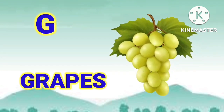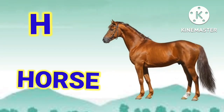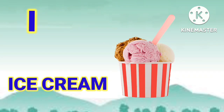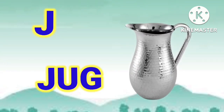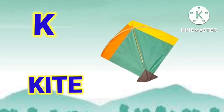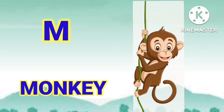G for Graves, H for Horus, I for Ice Cream, J for Jug, K for Kite, N for Loan, M for Monkey.